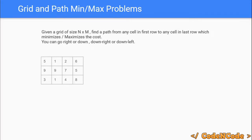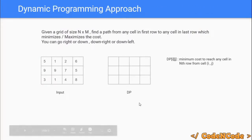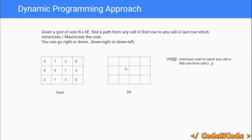We create a DP array of the same size as the input. dp[i][j] tells you the minimum cost to start from cell (i,j) and reach the end goal, which is any cell in the nth row. So dp[2][2], for example, gives the minimum cost to reach any cell in the last row starting from cell (2,2). We start from cell (n,m) as in the previous lecture to identify the base case.